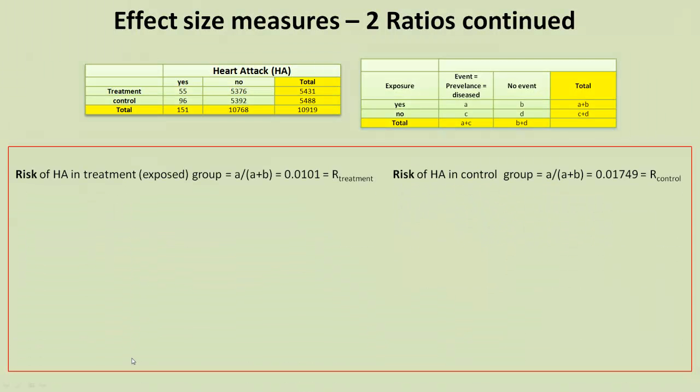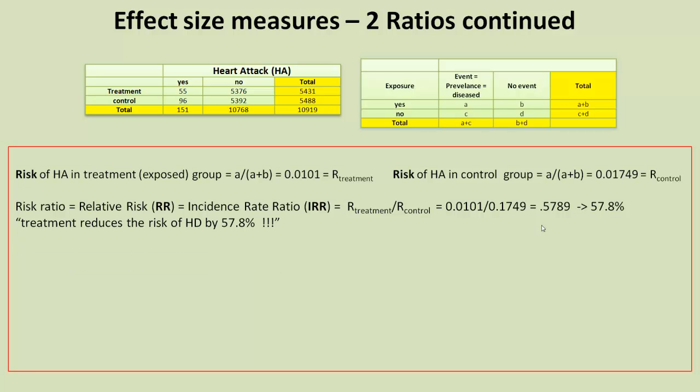Let's look at some more ratio measures. Back to our risks there of heart attack in the treatment group and heart attack in the control groups. We can actually just divide one by the other and we get 0.5789, as we said before, relative risk. And we can say that means that treatment reduces the risk of heart attack by 57.8%. Sounds an incredible success, doesn't it? But remember, we're talking about an incidence of 1 to 1.7%, really.